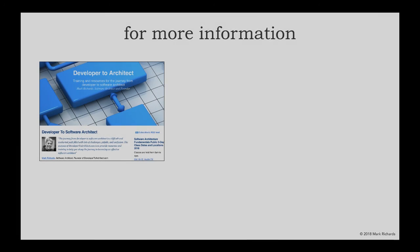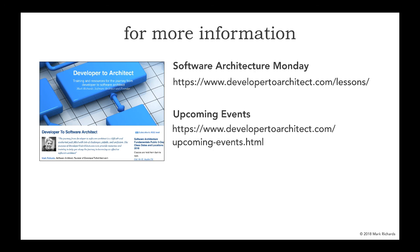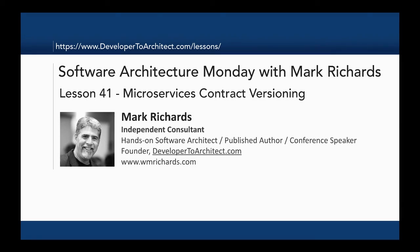So this has been Software Architecture Monday. For more information, you can go to my website, developer2architect.com/lessons, which contains lots of lessons every week for software architecture topics. You can also find me on upcoming events by going to developer2architect.com/upcoming-events.html. This has been Lesson 41, Microservices Contract Versioning. My name is Mark Richards — thank you so much for listening. Stay tuned next week for another architectural lesson. Thank you.